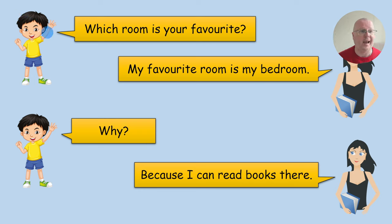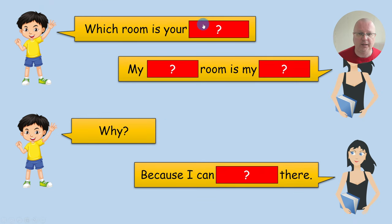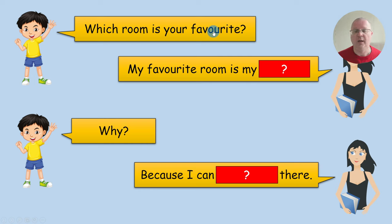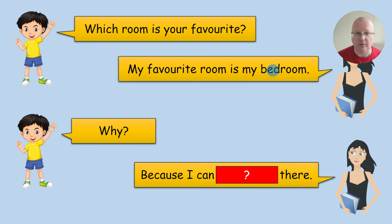In my example, one student asks, 'Which room is your favorite?' The other answers, 'My favorite room is my bedroom. Why? Because I can read books there.' You can make this dialogue more challenging by covering key expressions or keywords with red boxes — this will make your students think. If you see that they are struggling with these words, you can always click on the box and reveal the words for your students. You can also change the keywords on every slide.